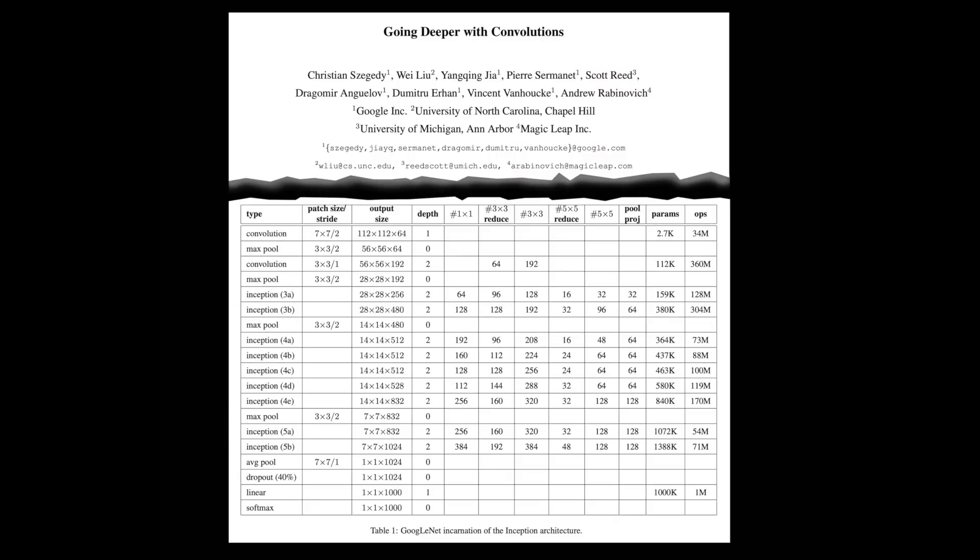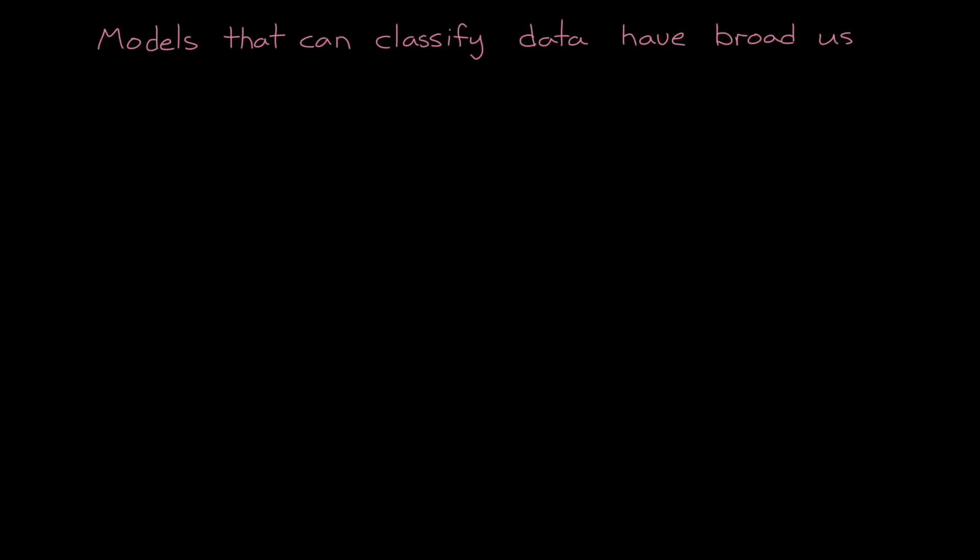For example, GoogleNet, which is trained to recognize objects and images, has about 7 million parameters. To tune networks like these requires learning algorithms. These are optimization techniques that tweak and adjust the parameters over time.